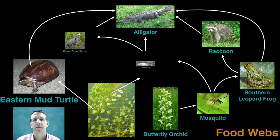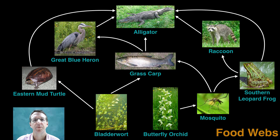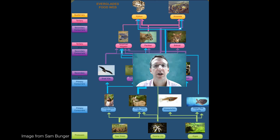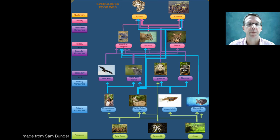Food webs also demonstrate the difficulty of trying to place an organism into a particular trophic level. Take the alligator for example. Depending on which food chain you follow in this particular web, the alligator could be placed in the third or the fourth or even the fifth trophic level. So you have to be a little bit careful when you're trying to assign a particular trophic level to a particular organism. And of course, the more organisms you add to the food chain, the more complicated it becomes.